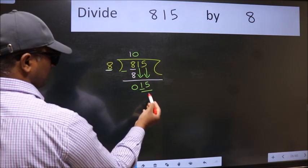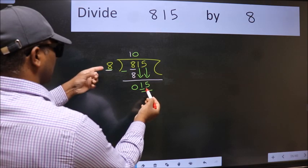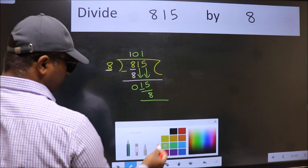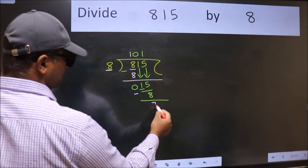So, 15. A number close to 15 in the 8 table is 8 once is 8. Now, we subtract. We get 7.